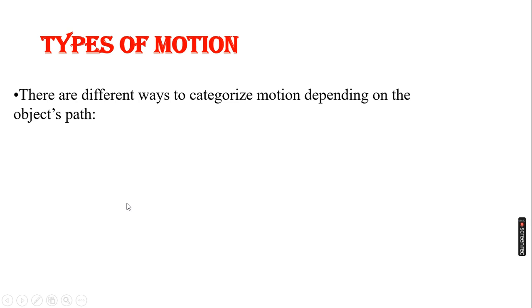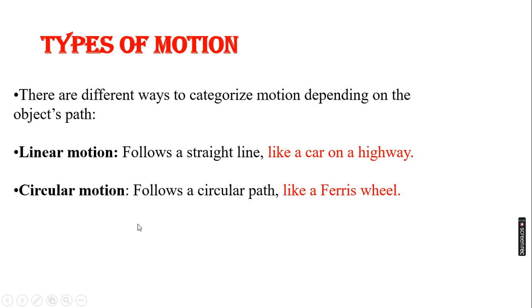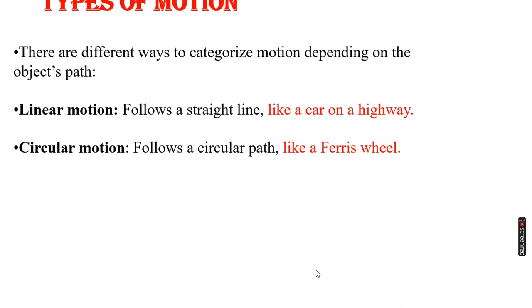If we want to see motion, the motion is different types. If there is a motion in a straight line path, then we call it linear motion, like a car on a highway. Next is circular motion. If there is a motion in a circular path, then we call it circular motion, like a ferris wheel.